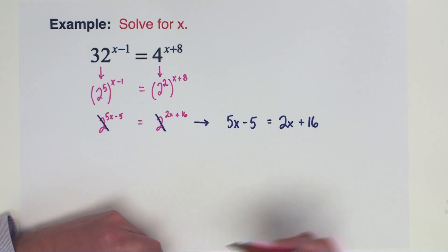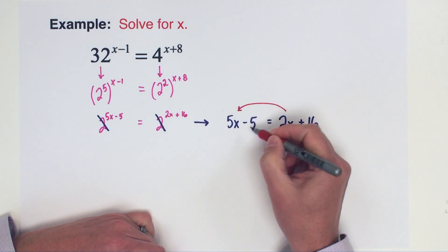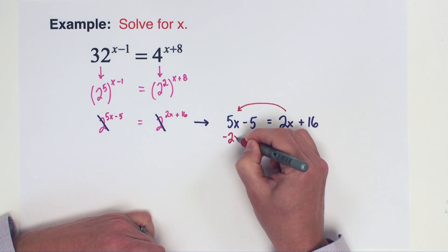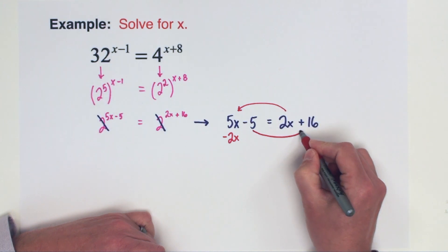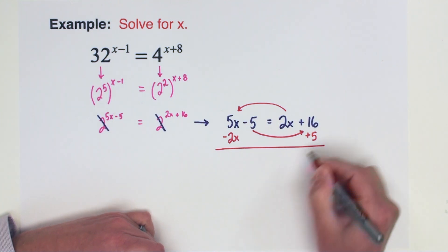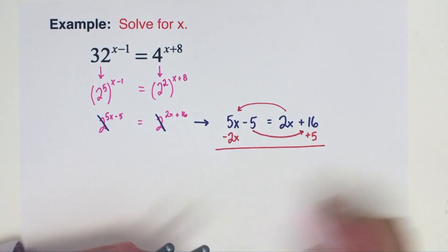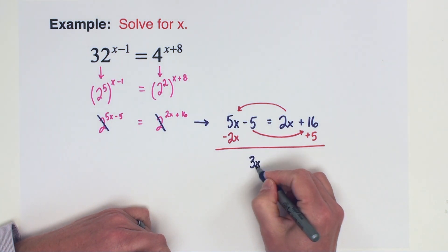So we're going to have 5x minus 5 equals 2x plus 16. I'm going to take my 2x that's on the right side and move it over to the left side by subtracting. I'm going to take this minus 5 and move it over to the right side by adding it. So we are left with 5x minus 2x is 3x, and 16 plus 5 is 21. Divide both sides by 3 to give x equals 7.